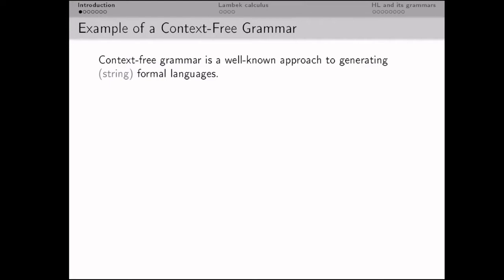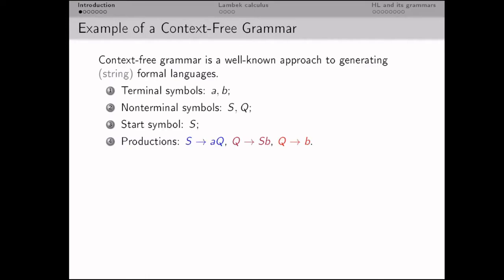I'll start with an example of a simple context-free grammar which will be used later. As I suppose everybody knows, context-free grammars generate string formal languages. For instance, this one has the start symbol S and certain productions. Given a context-free grammar, one can derive a string of terminal symbols by starting with the start symbol, applying productions in some order, and if we obtain a string containing only terminal symbols, then we succeed.